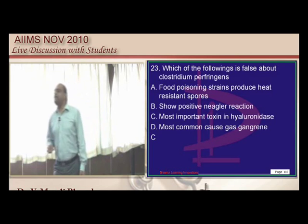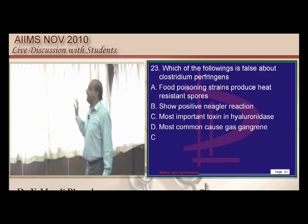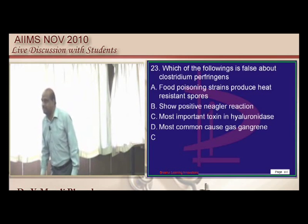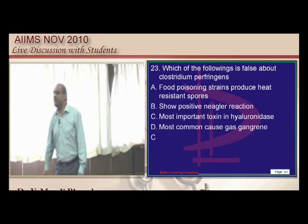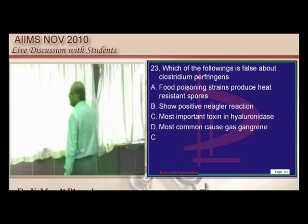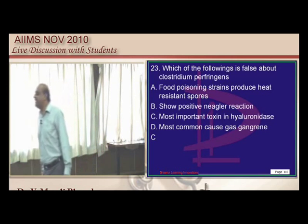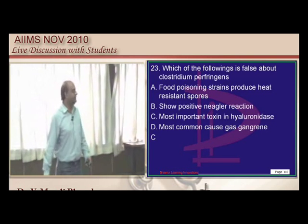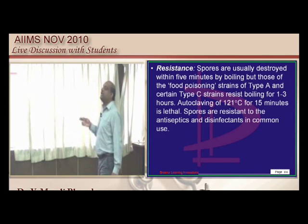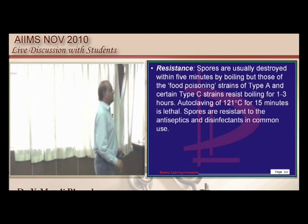With regard to Clostridium perfringens, this is a very subtle question. Generally, Clostridium spores are all heat labile, but only the food poisoning-causing strains of Clostridium have spores that are resistant to heat. Also, it is not hyaluronidase — rather it is lecithinase which is also responsible for the Nagler's reaction, considered the most important toxin of Clostridium perfringens.